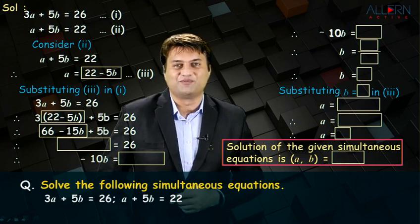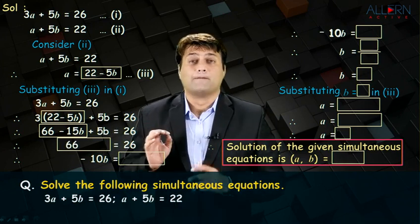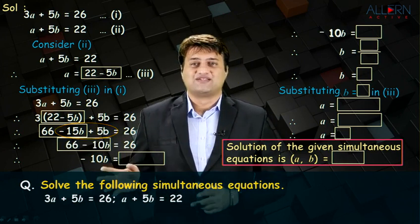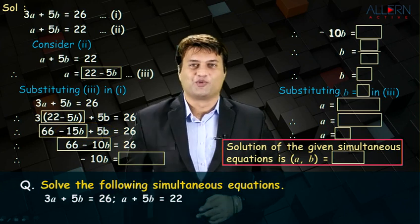Minus 15b plus 5b. What is minus 15b plus 5b? It is minus 10b. So, you get 66 minus 10b is equal to 26.